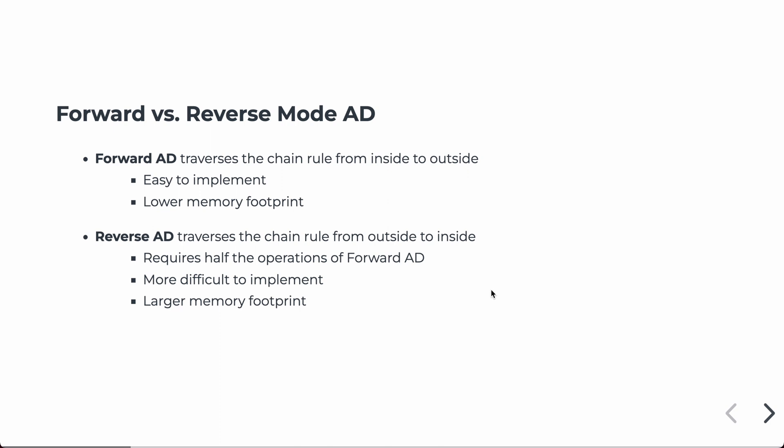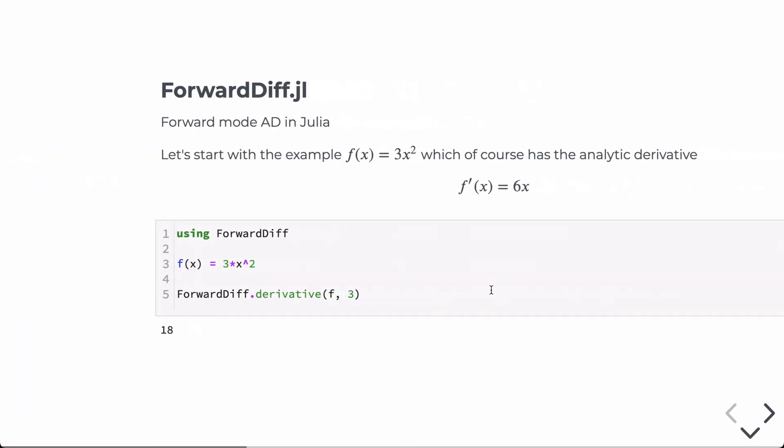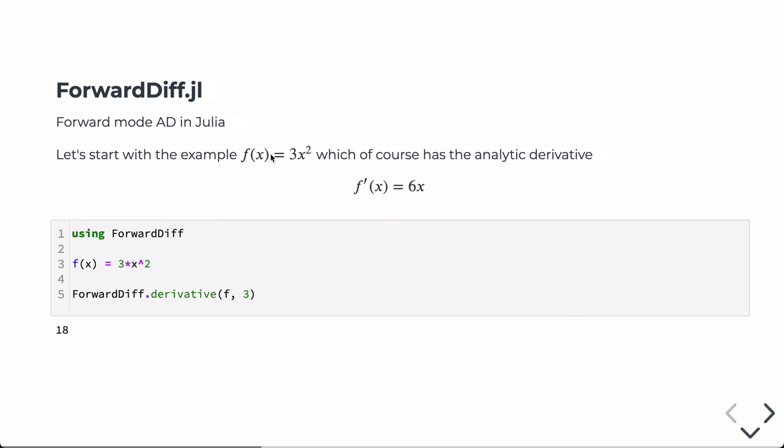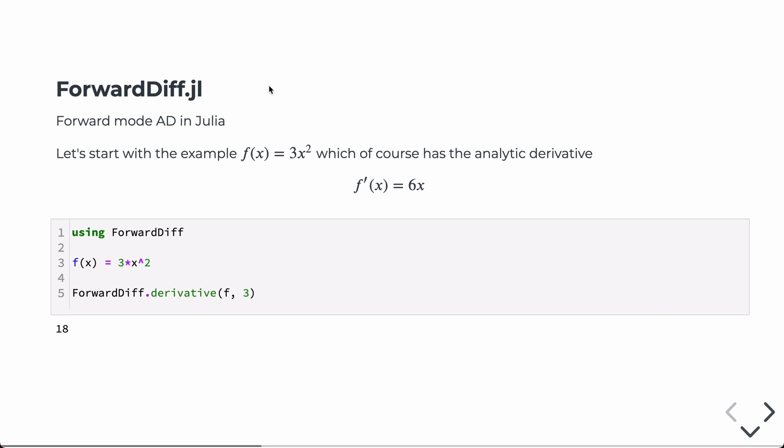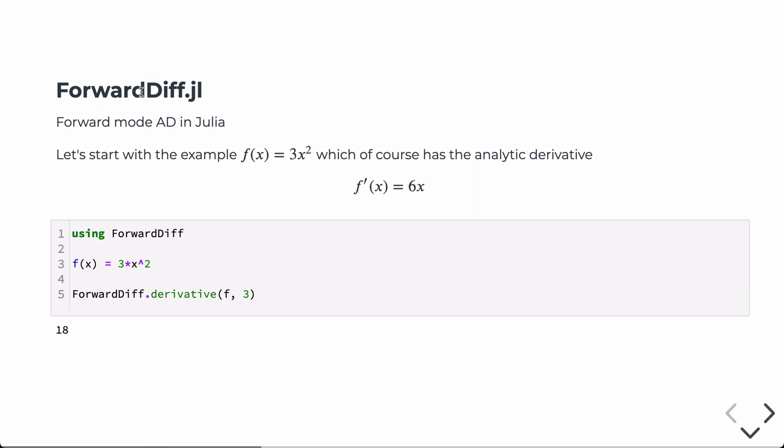So there's several packages that can do both. We're going to talk about the forward mode package, which is called forward diff.jl. This is a third-party package, and you have to install it through the Package Manager if you want to use it in Julia. But let's just start with some simple operations of how you would use it.